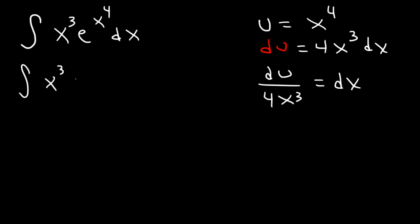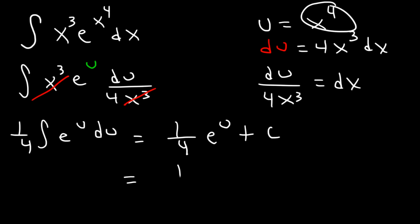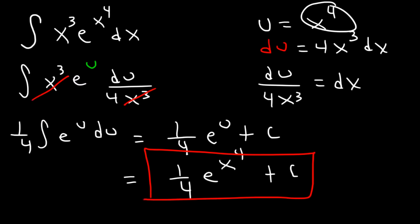Replace x to the 4th with the u variable, and replace dx with du over 4x cubed. Cancel x cubed, then move the 4 to the front, giving 1/4 times the antiderivative of e to the u du, which equals 1/4 e to the u plus c. Replace u with x to the 4th, so the final answer is 1/4 e raised to the x to the 4th plus c.